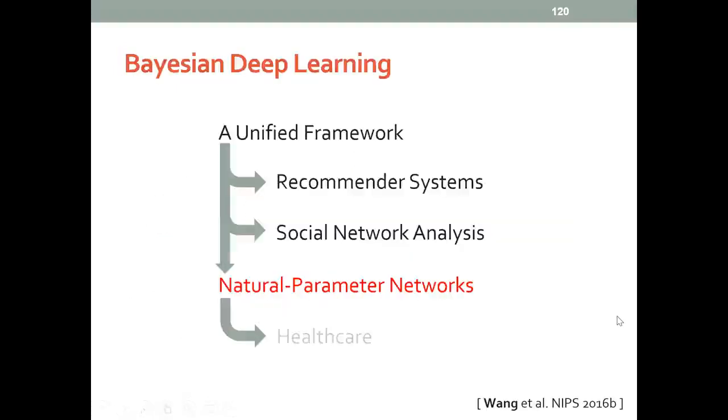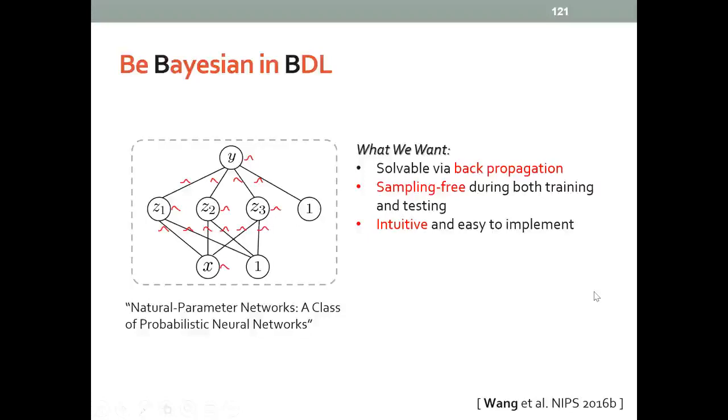Now I'm going to talk about an efficient lightweight Bayesian treatment that we propose for neural networks and Bayesian deep learning. We call this method natural parameter networks. Ideally, we want this Bayesian treatment to be solvable via backprop so it's efficient. We also want it to be sampling-free because sampling is typically inefficient. And last but not least, we want it to be intuitive and easy to implement.